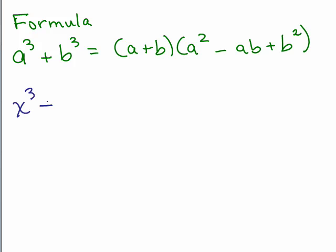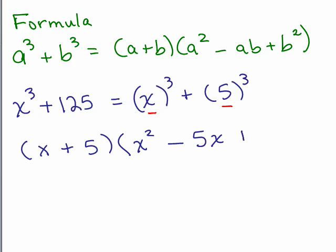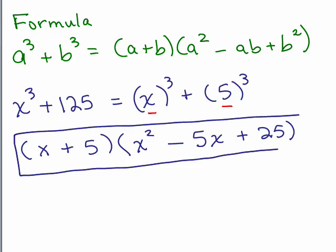Let's do an example: x cubed plus 125. It might be easier if you think of this as x cubed plus 5 cubed. I'm first going to write out the x plus 5 — the two terms with no cubes. The next part has three parts: the first term squared, so x squared; since this was a plus, that becomes a minus for the middle term; then x times 5, which is 5x. And the last term is always plus: 5 squared, which is 25. That's the answer, and you can't go any further unless there was a common factor to take out.